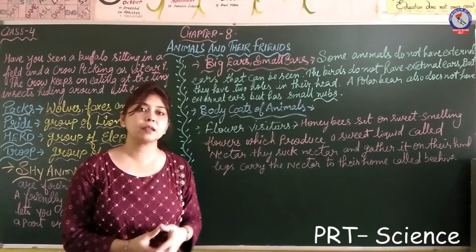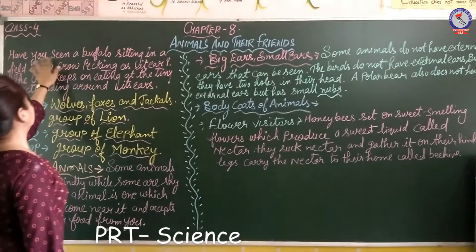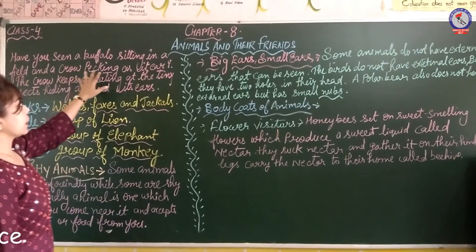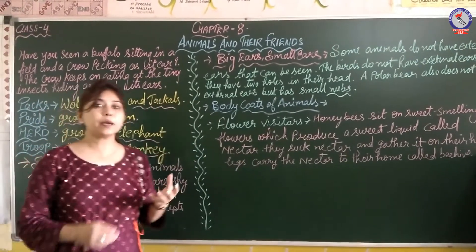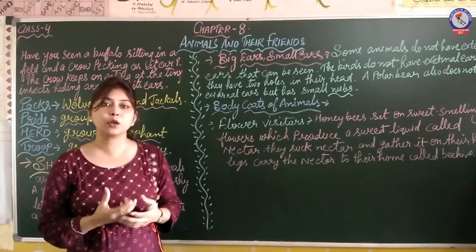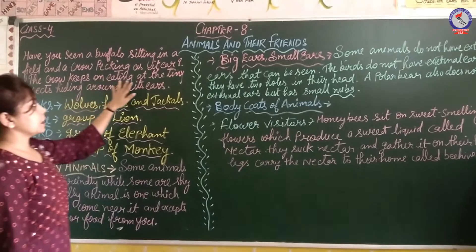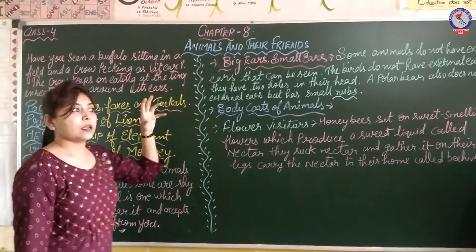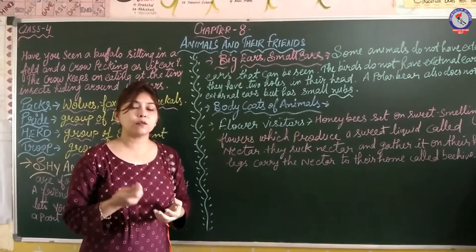Some animals also live together. Have you ever seen a buffalo sitting in a field and a crow picking at its ear? The crow keeps on eating the tiny insects hiding around and inside the ear of the buffalo. So the insects in the ear of the buffalo have been eaten by the crow.